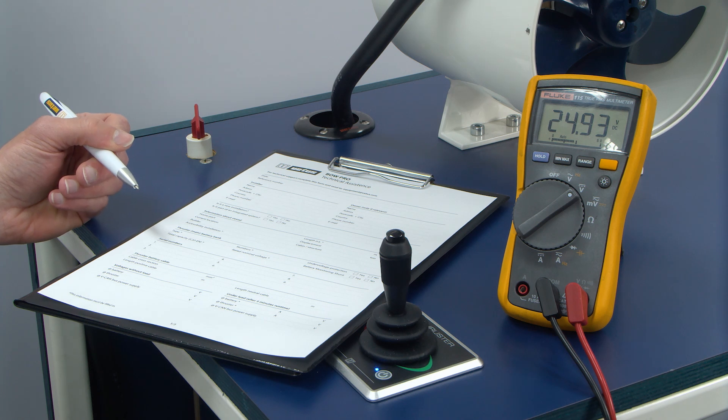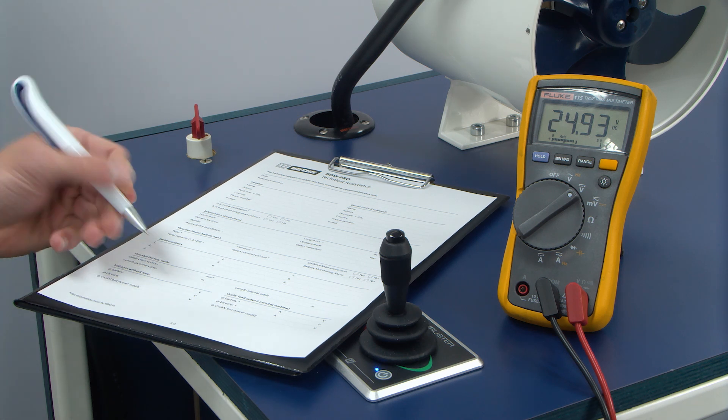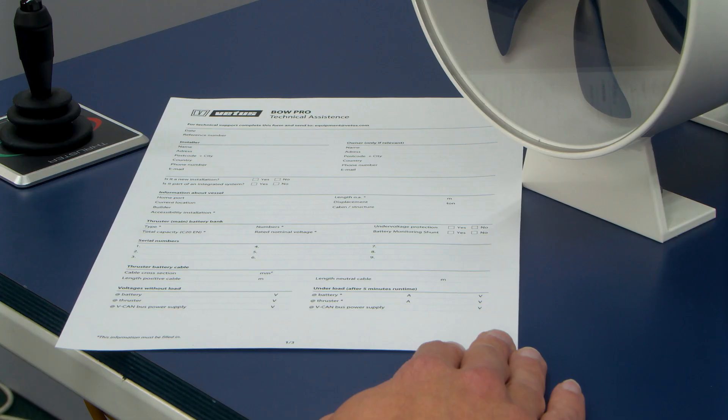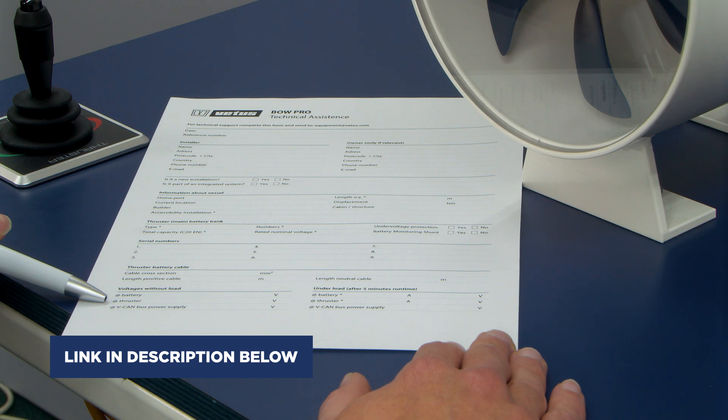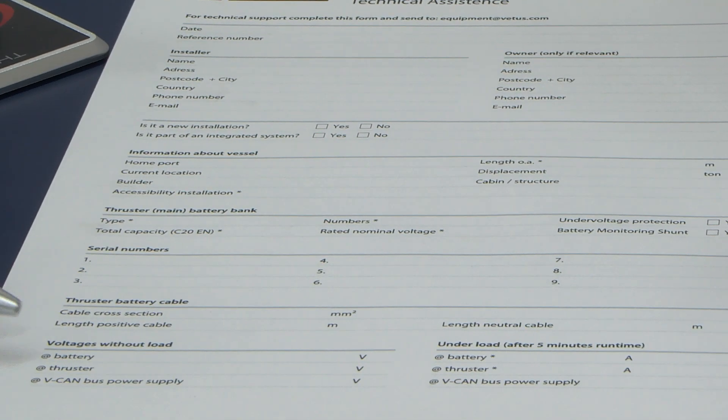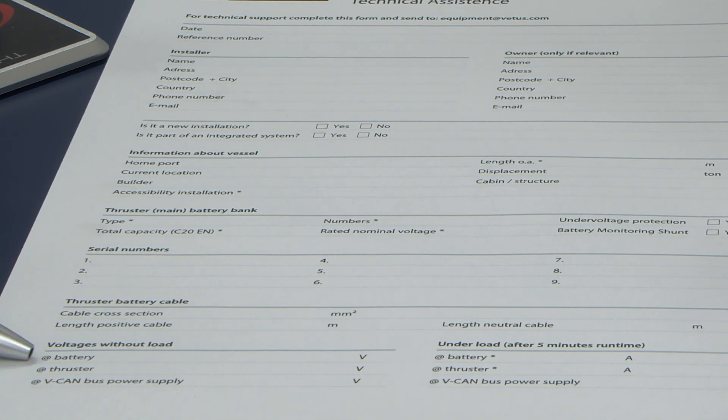For your own troubleshooting, and in case a Vetus dealer is required to help, it is necessary you write down all measured values. You can use the BowPro assistance form as a guideline, which you will find in the video description. Use the bottom part of the form for filling in the measured values.